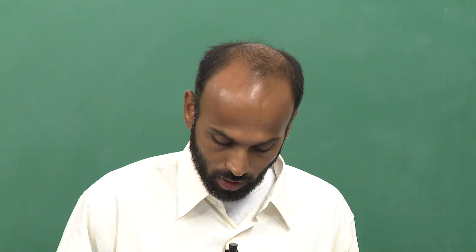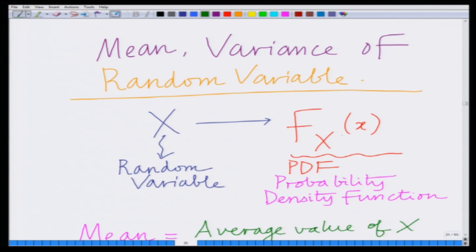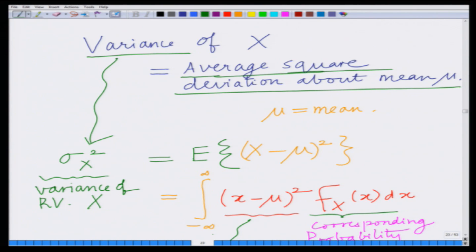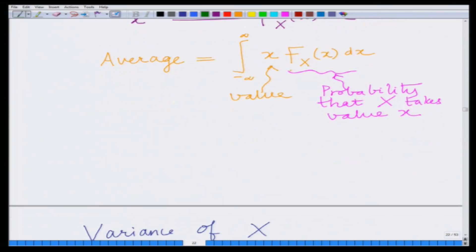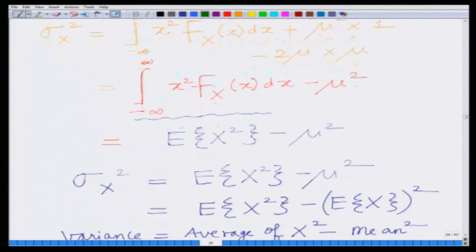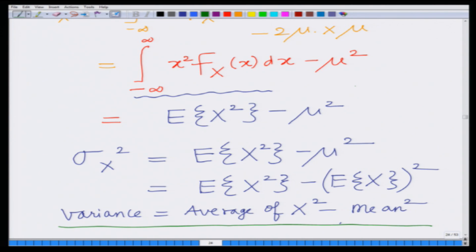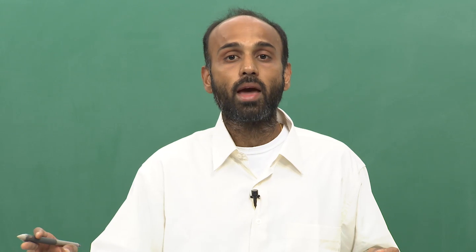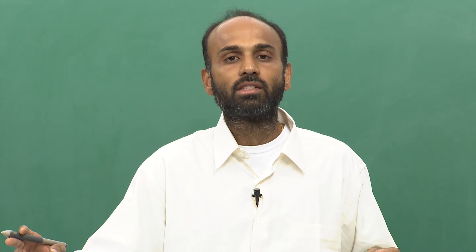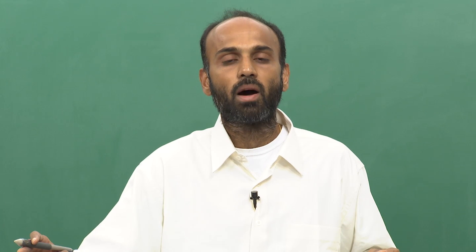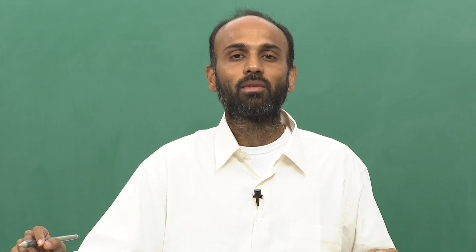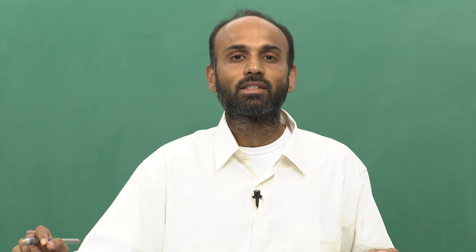So, what we have done so far: starting with the random variable X and the probability density function f(x), we defined the mean as the integral from minus infinity to infinity of x·f(x) dx, and we looked at the variance — the average value of the square of the deviation of the random variable about the mean — denoted by sigma X squared, which equals E[X²] minus mu², where mu is the mean. These are two important parameters for the random variable X. We will stop this module here and look at applications in subsequent modules. Thank you very much.